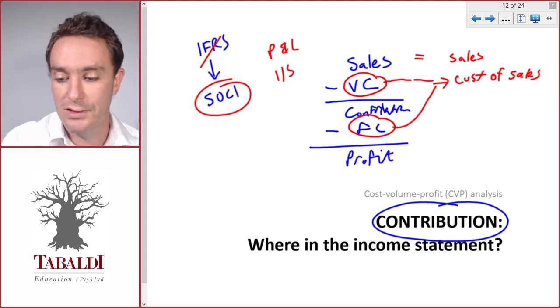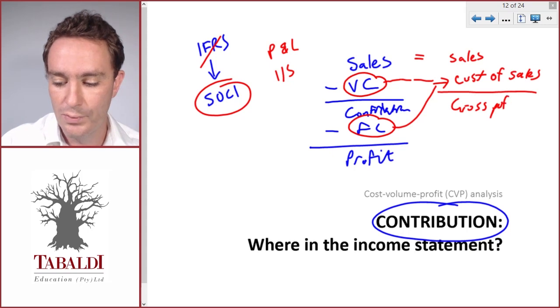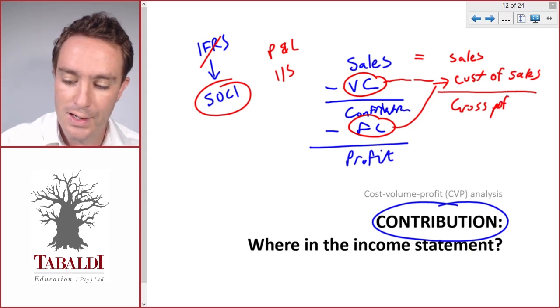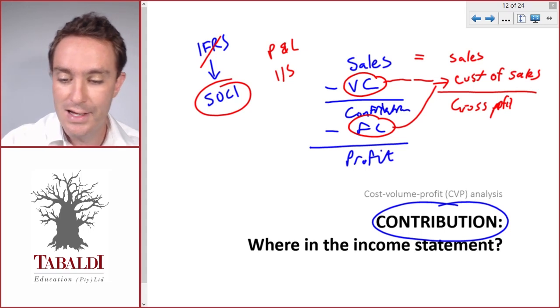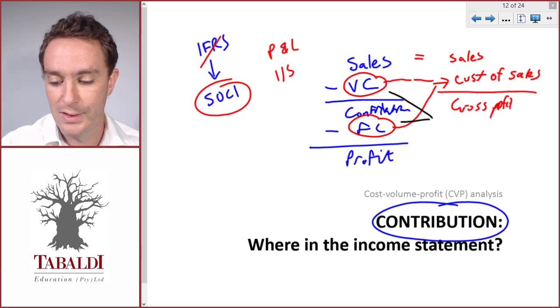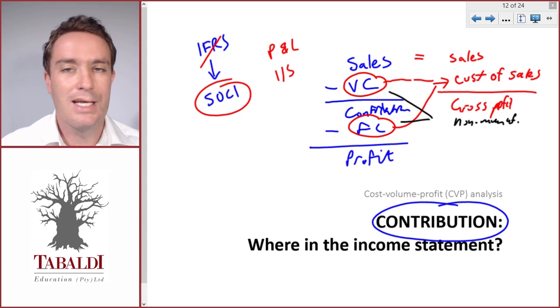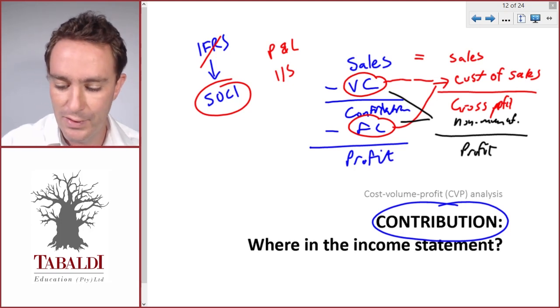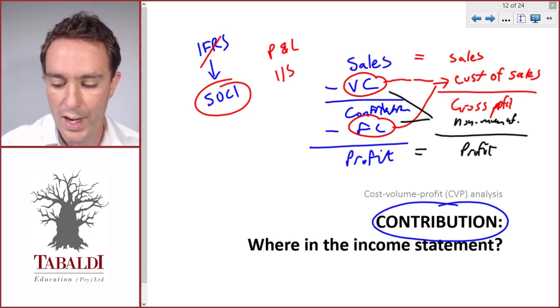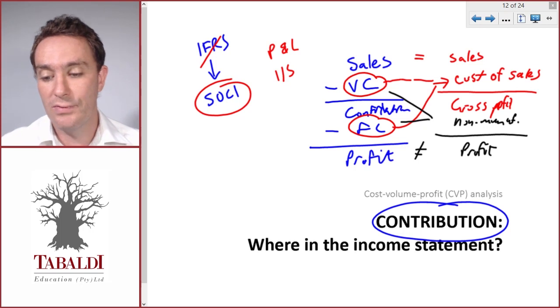That will give us Gross Profit, which you'll be familiar with if you've looked at financial statements before. Then they'll have to take all the non-manufacturing costs from variable and fixed costs - that's non-manufacturing or other expenses like selling and distribution, marketing, admin - and then they'll get the Profit. We'll see later in a future topic when these profits will and won't be the same.